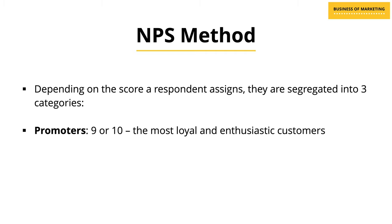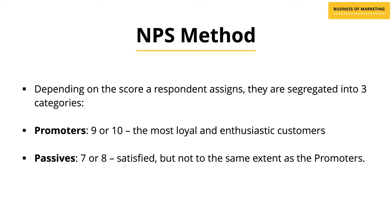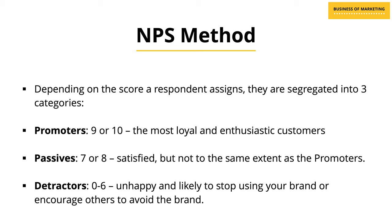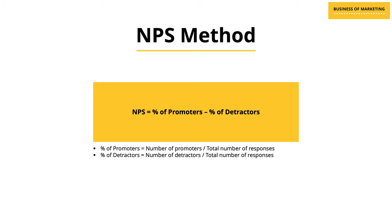Depending on the score a respondent assigns, they are segregated into three categories. The first are promoters — respondents who scored 9 or 10 — the most loyal and enthusiastic customers of the brand. The second are passives, with a score of 7 or 8, who are satisfied but not to the same extent as promoters. The last group is detractors, with a score between 0 to 6 — an unhappy group likely to stop using your product or even encourage others to stop using it. To calculate NPS, you subtract the percentage of detractors from the percentage of promoters, leaving a number between minus 100 to 100.